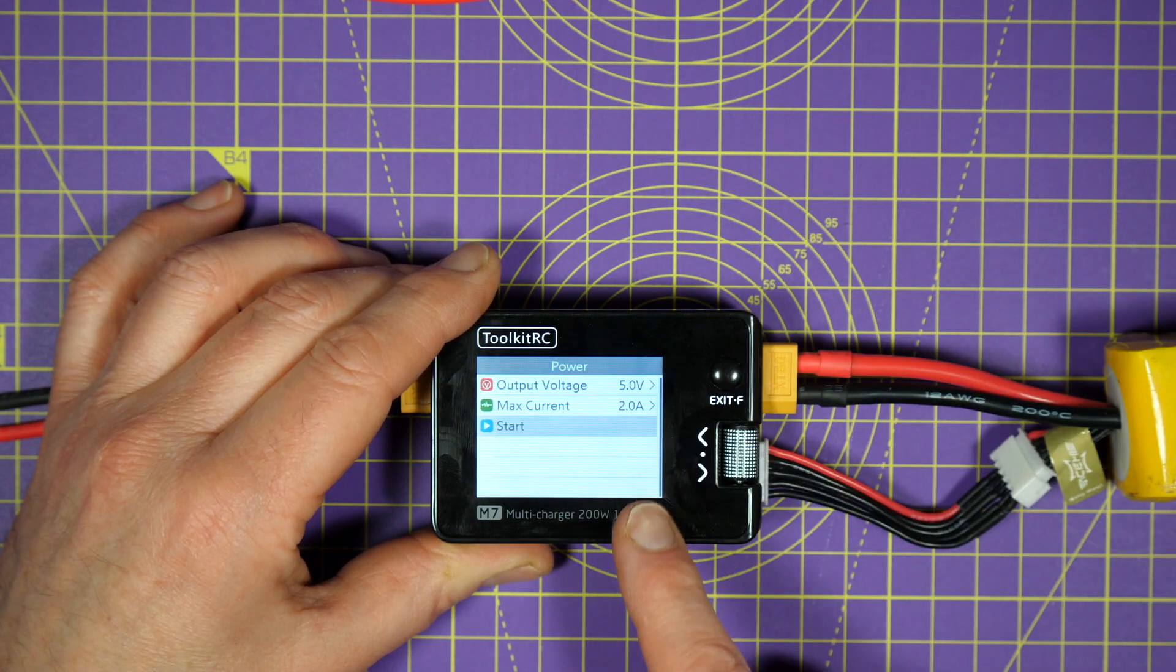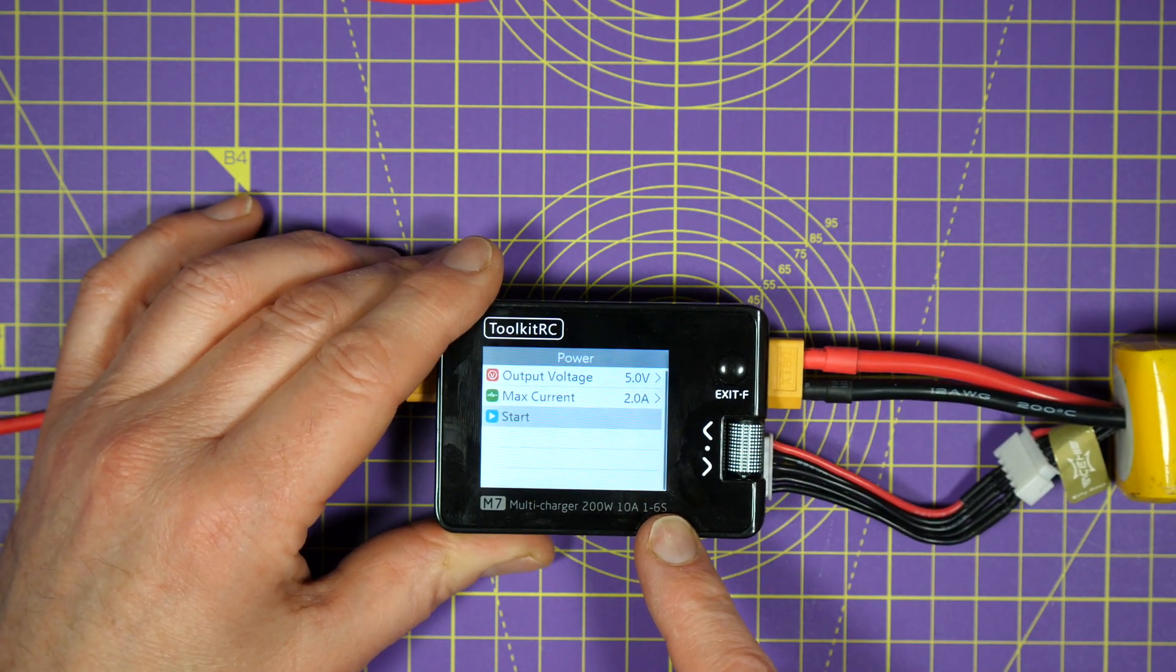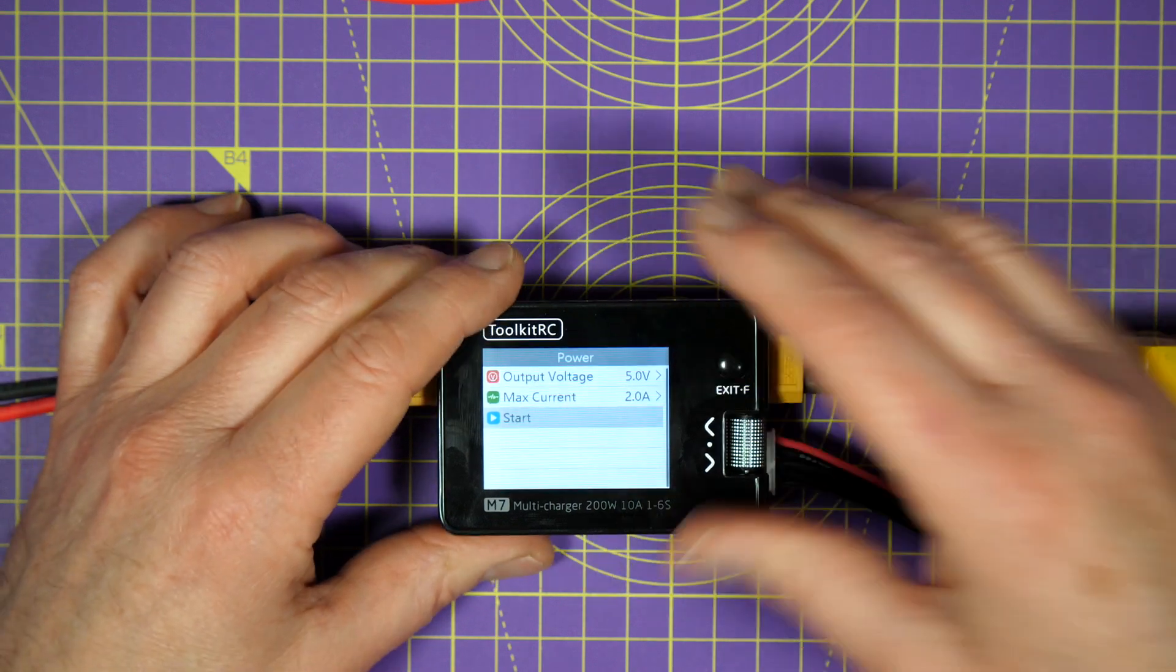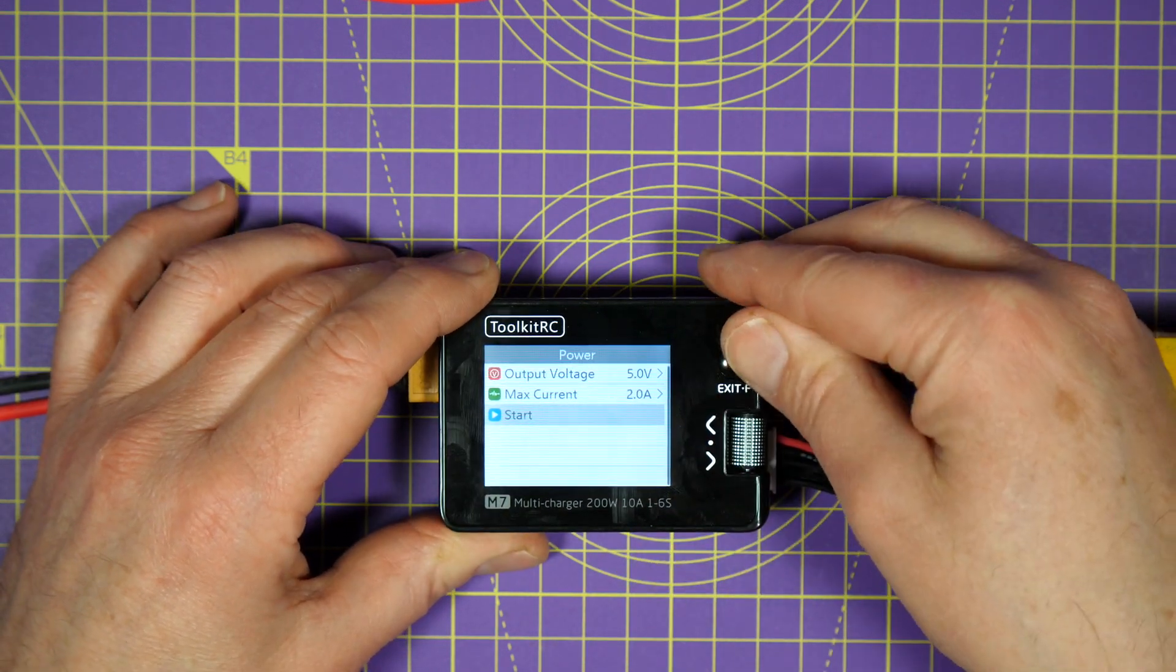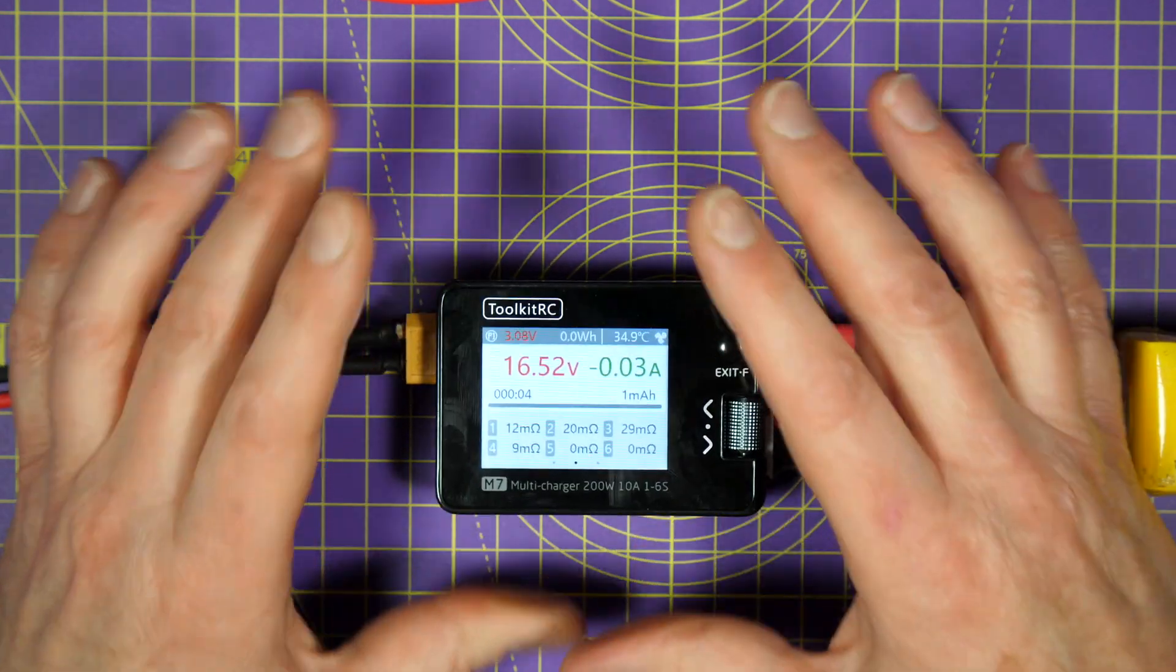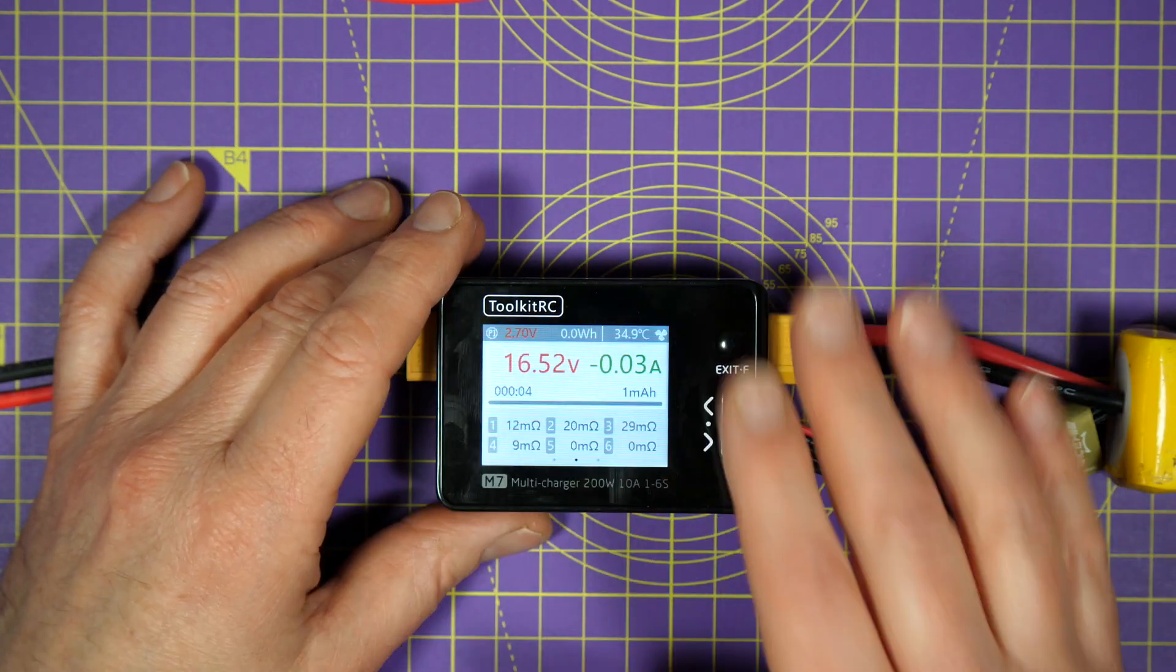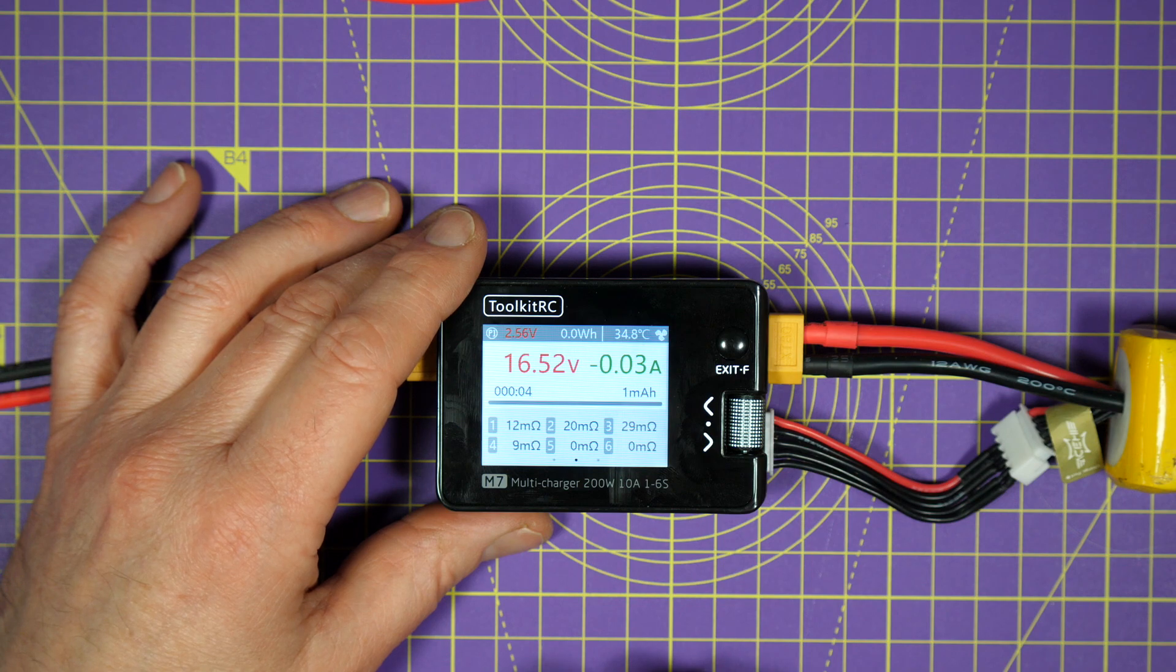And this doubles as a DC power supply, so you can just take the output of this and set it to be whatever you want. Very clever. This is exactly the same as the M6, but they just cleaned up all the display. Very nice.